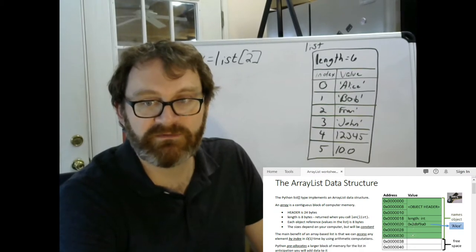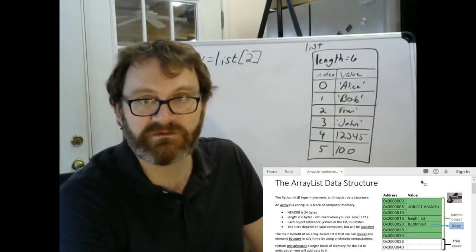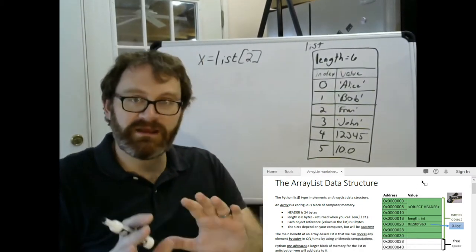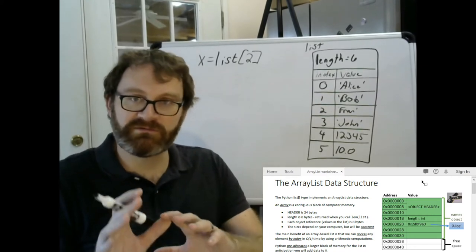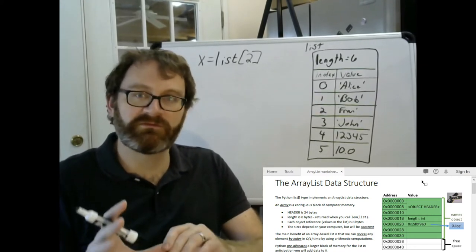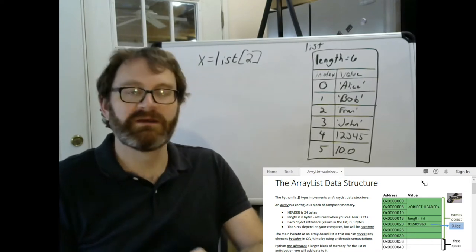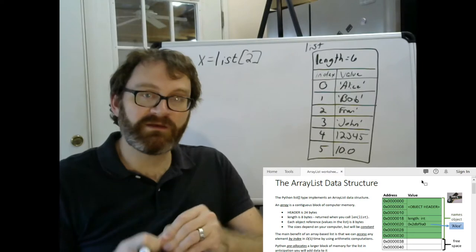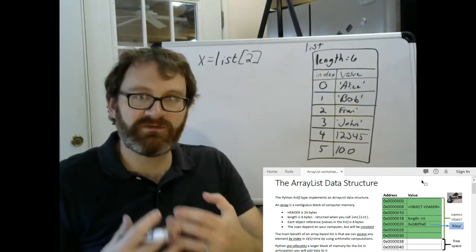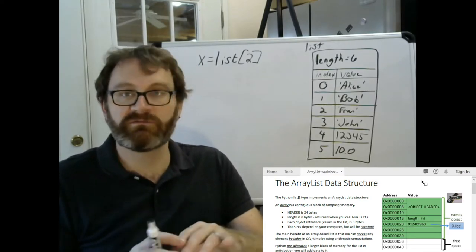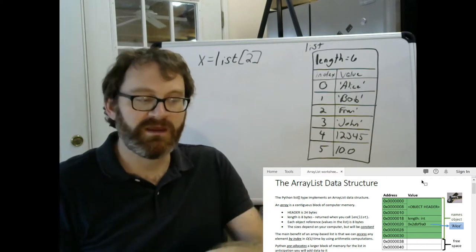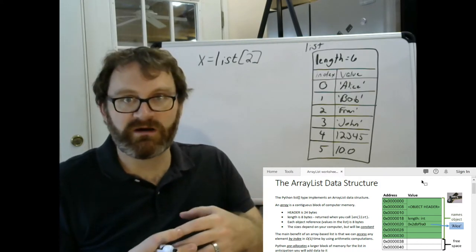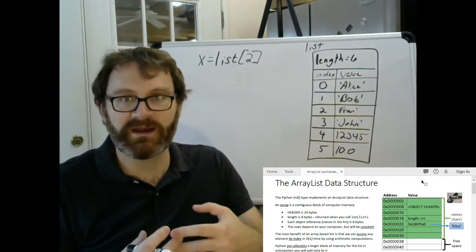And then each object reference takes eight bytes. Again, those numbers may be a little different. The specific numbers may be different for your computer, but they will always be constant for every Python list you make on your computer. Python uses that fact to its advantage, these constant size things, as well as some pretty simple arithmetic, to really do some cool stuff with this array of memory.